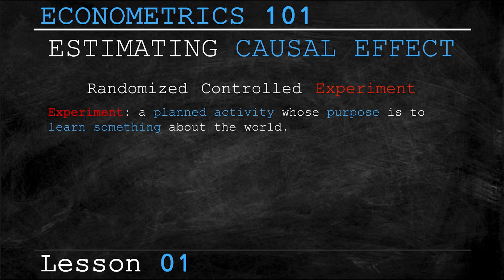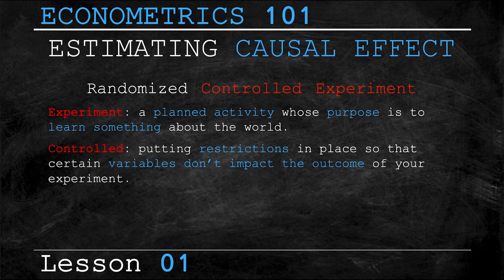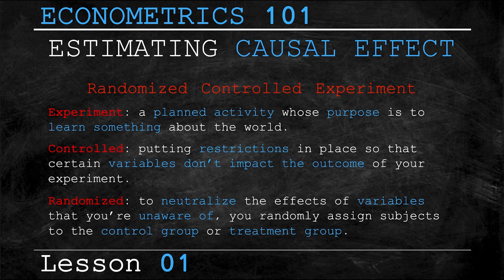An experiment can be defined as a planned activity whose purpose is to learn something about the world. Now the controlled aspect involves putting restrictions in place so that certain variables don't impact the outcome of your experiment, only the specific variable that you're concerned with. Finally, to neutralize the effects of variables that you're unaware of, you randomly assign subjects to a control group or a treatment group when performing controlled experiments.